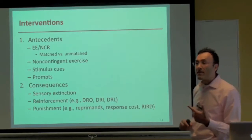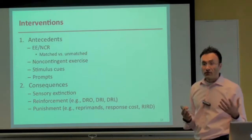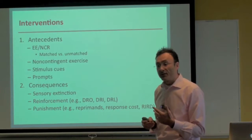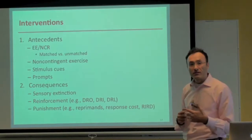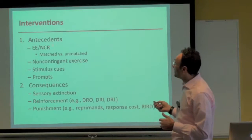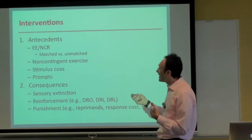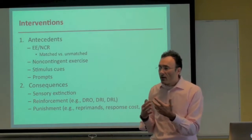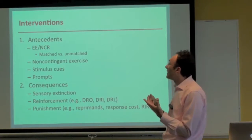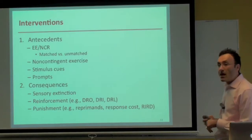The first antecedent intervention is environmental enrichment, also known in the literature as non-contingent reinforcement (NCR or EE — they're synonymous). I'm not a fan of the NCR term because reinforcement is by definition a consequence strategy — it's something we do after a behavior — but here it's an antecedent. Also, non-contingent reinforcement typically doesn't increase behavior, which contradicts the definition of reinforcement. So I prefer environmental enrichment.